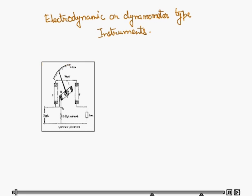We will study about the electrodynamic or dynamometer type instruments. The construction is shown here. First we will discuss the principle. The basic principle of dynamometer type instrument is that when a current carrying moving coil is placed in a magnetic field produced by the current carrying fixed coil, a force is exerted on the coil sides of the moving coil and deflection takes place.